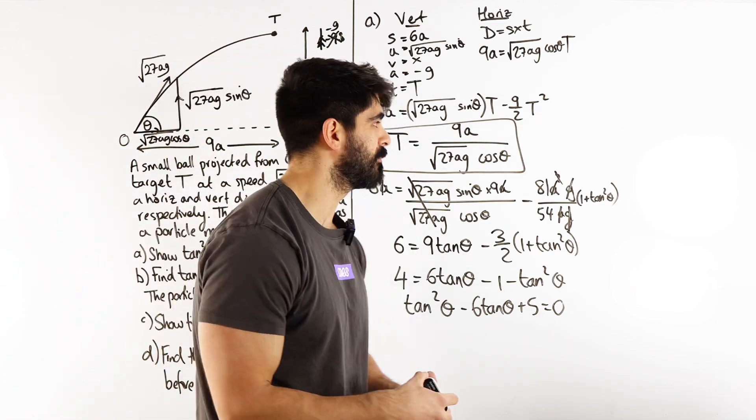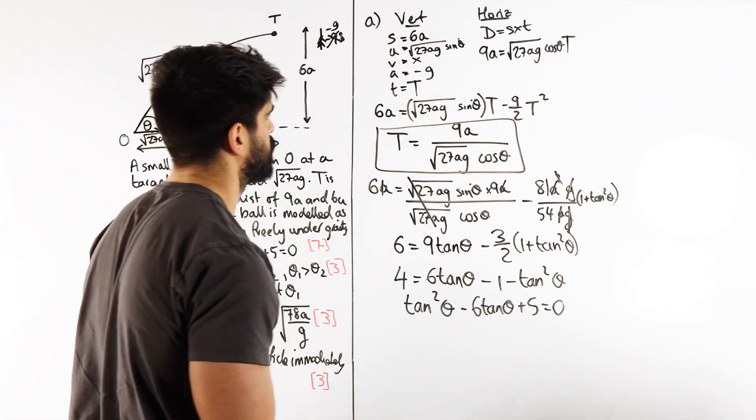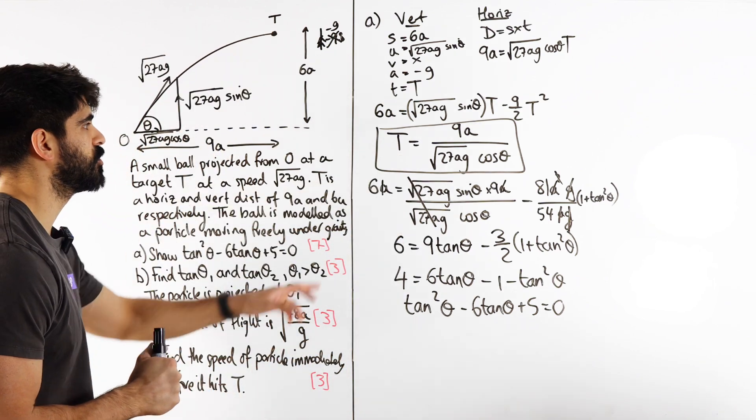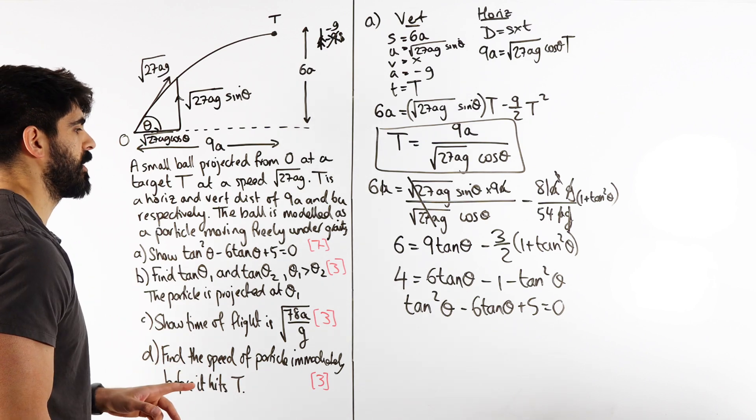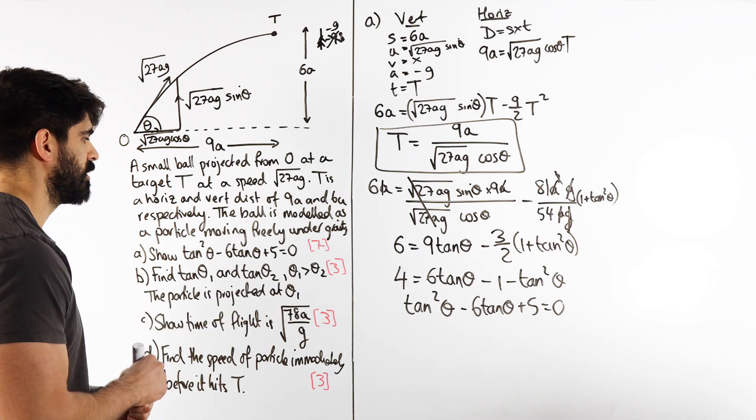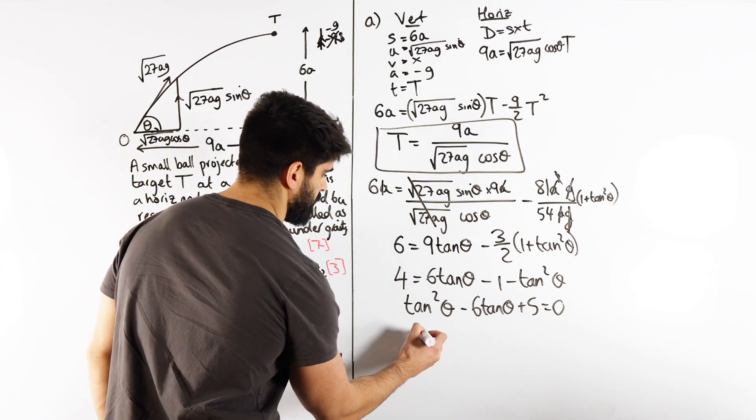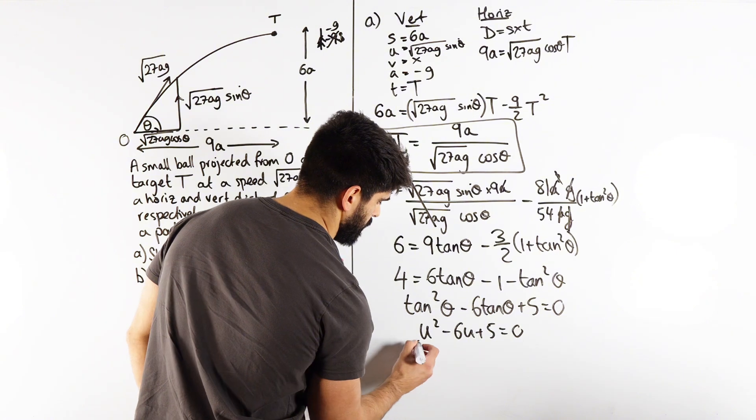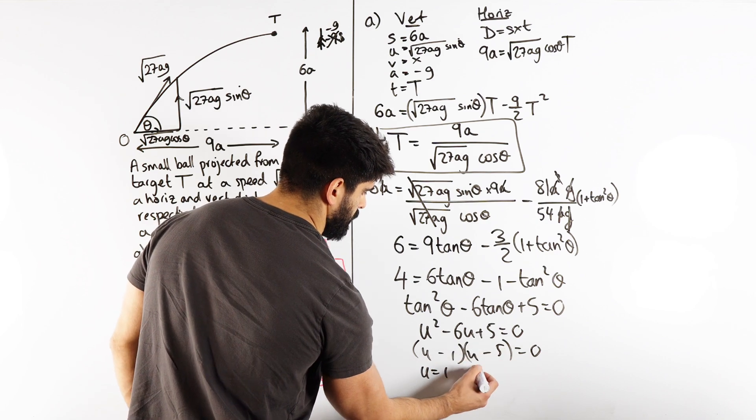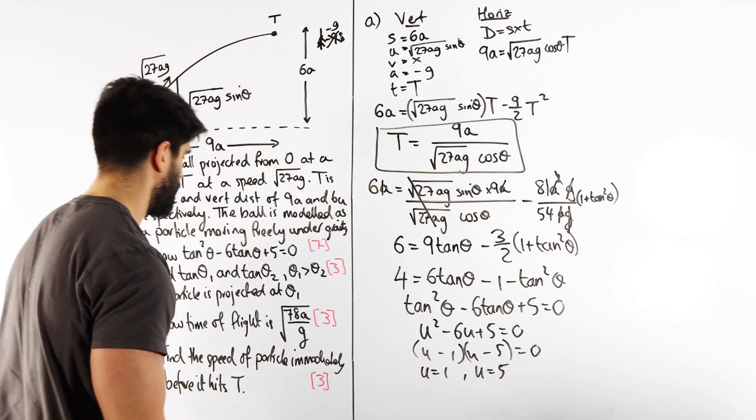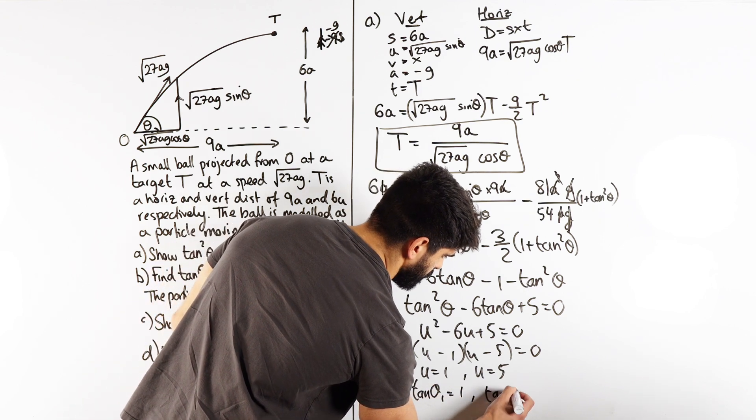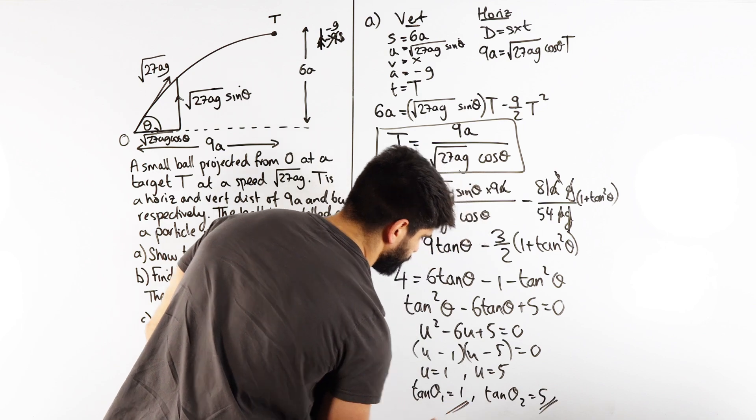As you can see, I don't plan the answers to these. I just find a good question and I just do it. I feel like this is going to be important for this part. It says find tan theta1 and tan theta2 where theta1 is bigger than theta2. So we have u² - 6u + 5 = 0, which factors as (u - 5)(u - 1), so u = 1 or u = 5. So we have tan theta1 = 5 and tan theta2 = 1.